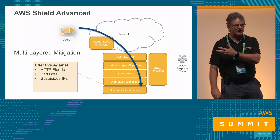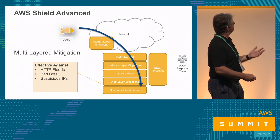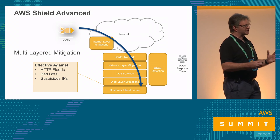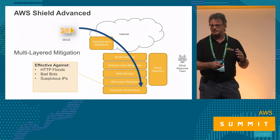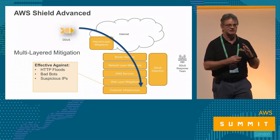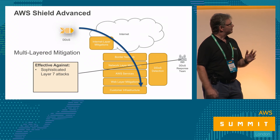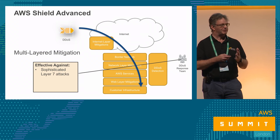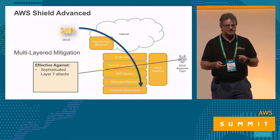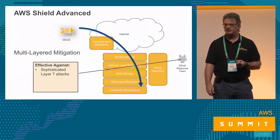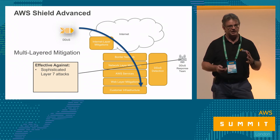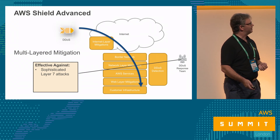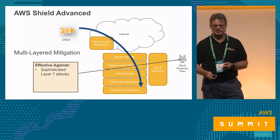Then we get down to the WAF, which handles layer 7 attacks — bad bots, HTTP floods, SQL injections. By this point AWS thinks about 96% of all attacks have been picked up and dumped. A few may still potentially get through, and that's where the DDoS Response Team kicks in. If you get indications in CloudWatch alarms, CloudWatch metrics, or PagerDuty that mitigation is in progress, you can get on the phone with the DRT team — they'll be on your console, looking at your traffic and rewriting WAF rules on your behalf to mitigate that traffic there and then.